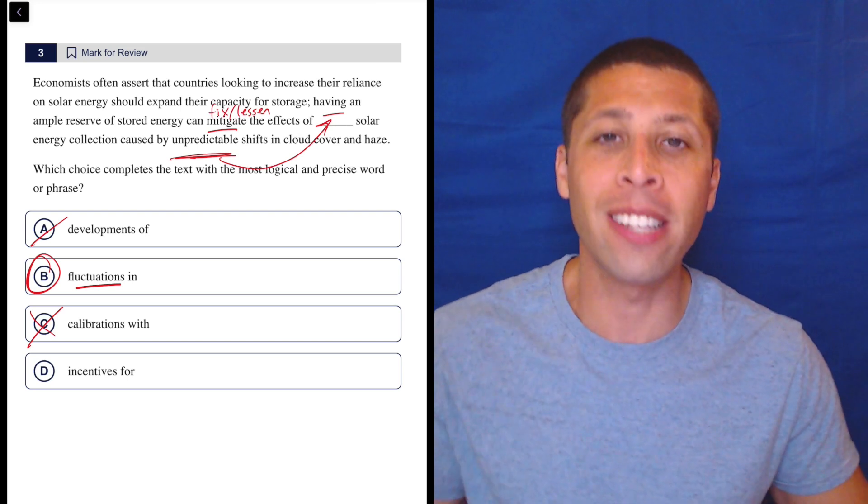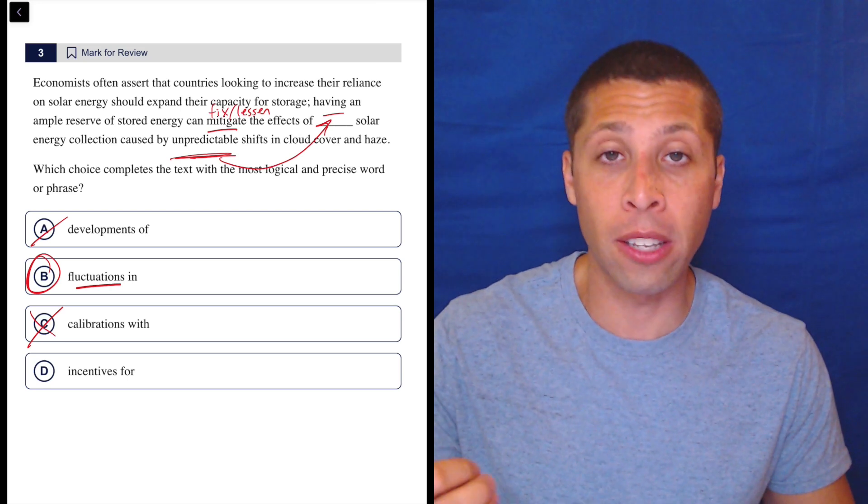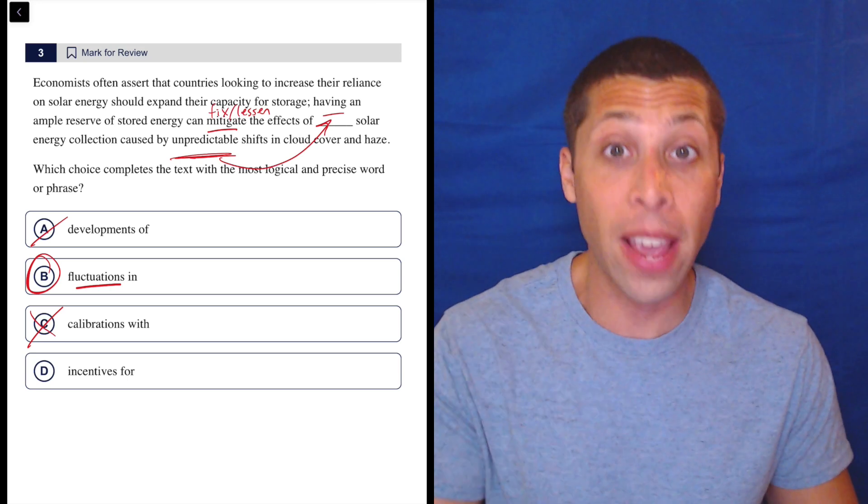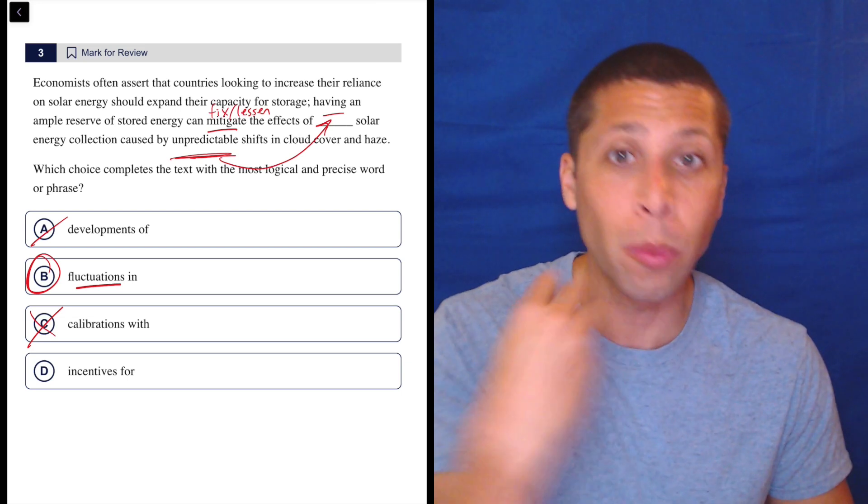Incentives mean that there's some sort of reason to do it. There's a desire to do it. There is an advantage to collecting solar energy. So we wouldn't want to fix that. We would want to encourage that. That's something we want to have because it's good for the environment or whatever.